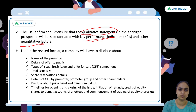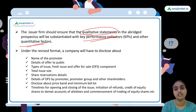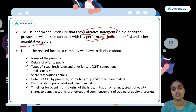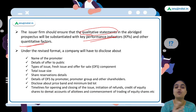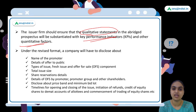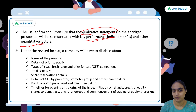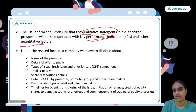All qualitative statements must be substantiated with key performance indicators or quantitative factors. For example, if a company claims it has been making profits for many years, it needs to share profit statements. If it claims to be doing CSR activities, it must share supporting quantitative data — just making statements without evidence is not acceptable.